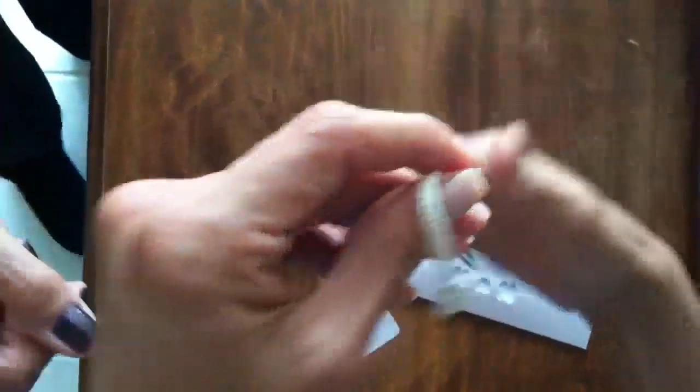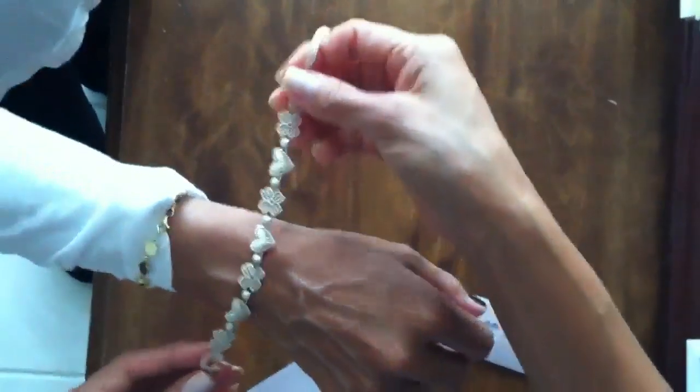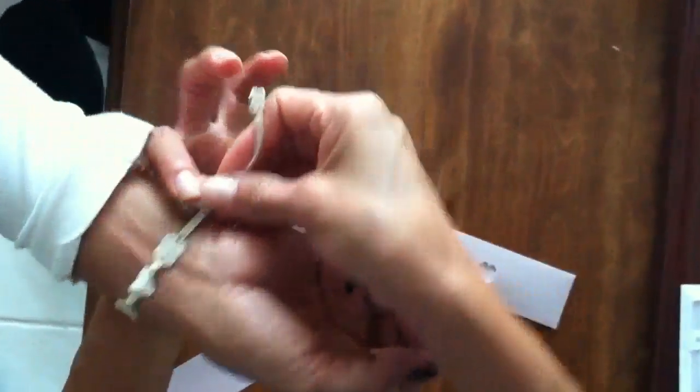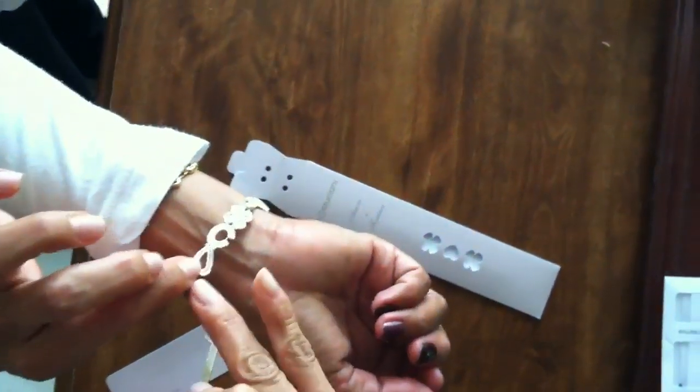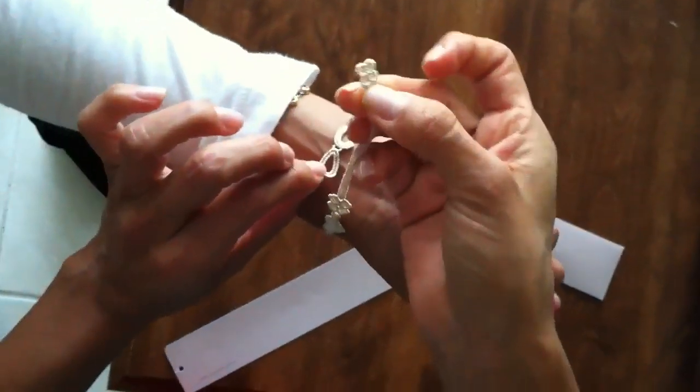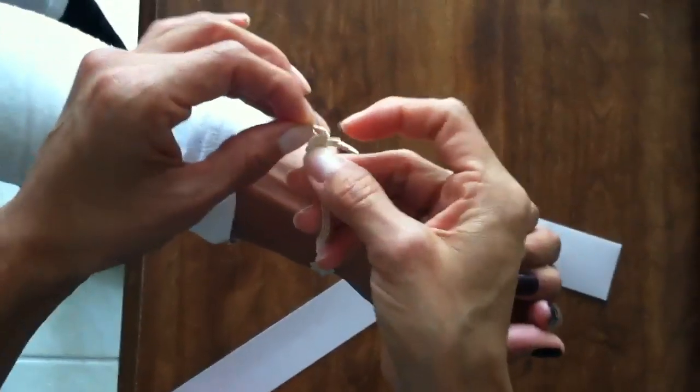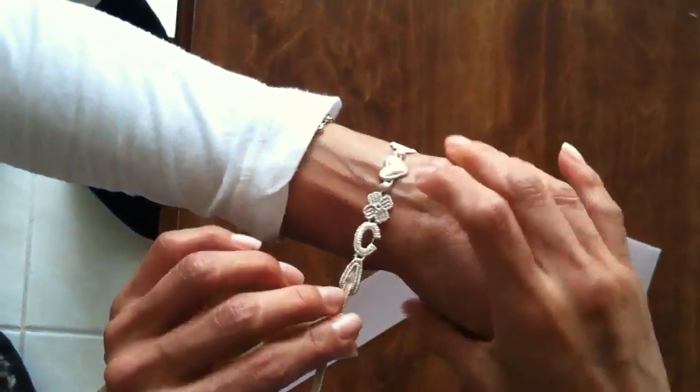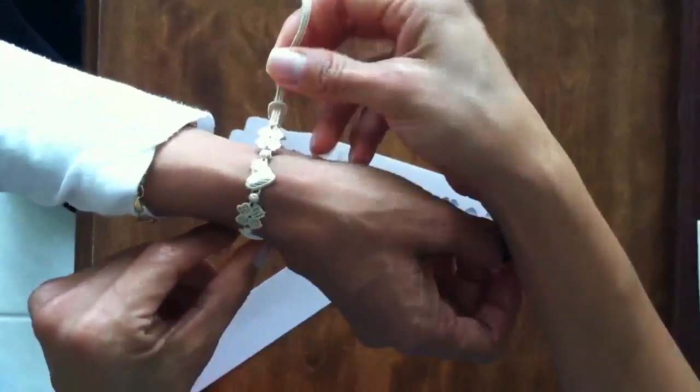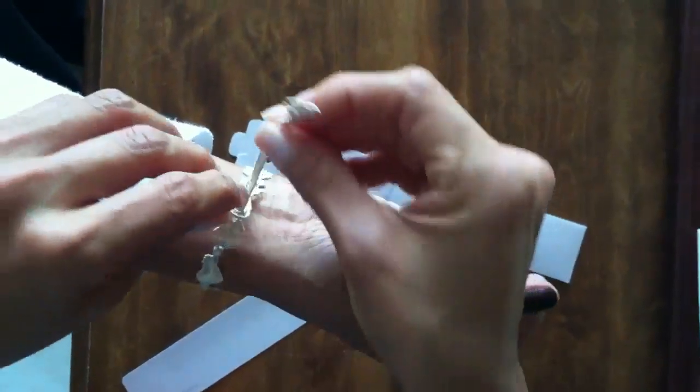Okay, so basically you're going to wrap it around your wrist. You're going to have the C for Curciani, and then you'll have this little loop here. You're going to take the other end of it and place it inside that loop, depending on how tight you want it.